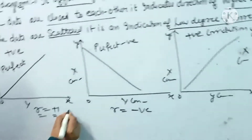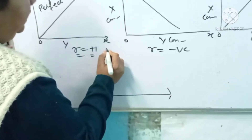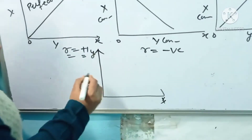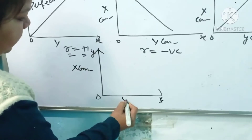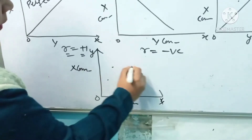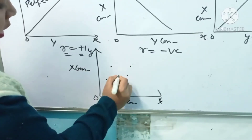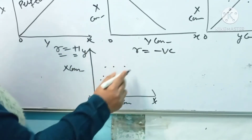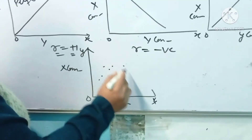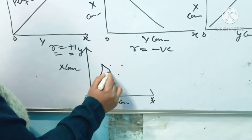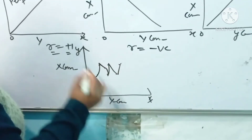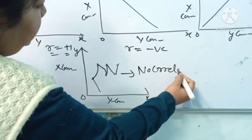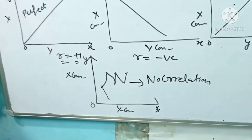The last presentation is also the most important one. In this presentation, we have to show a case where there is no type of correlation. Here we place our x and y commodity variables. If the dots are placed in such a way that if we try to choose any direction, it would be a zigzag type of direction — that is not possible to form clearly. This shows an absence of correlation, also known as zero correlation or no correlation.